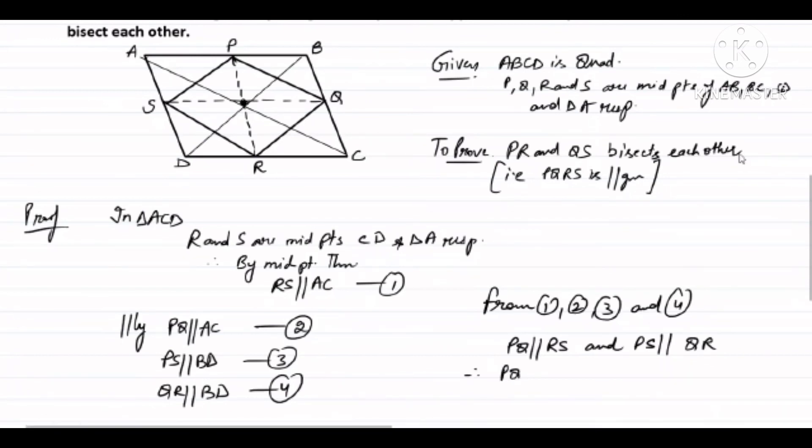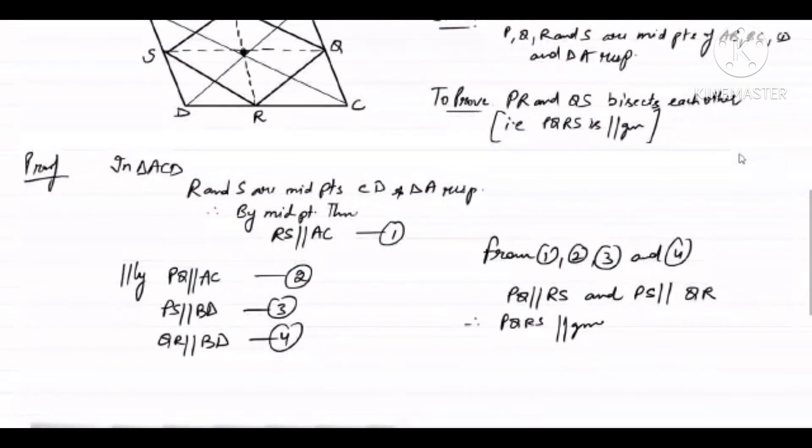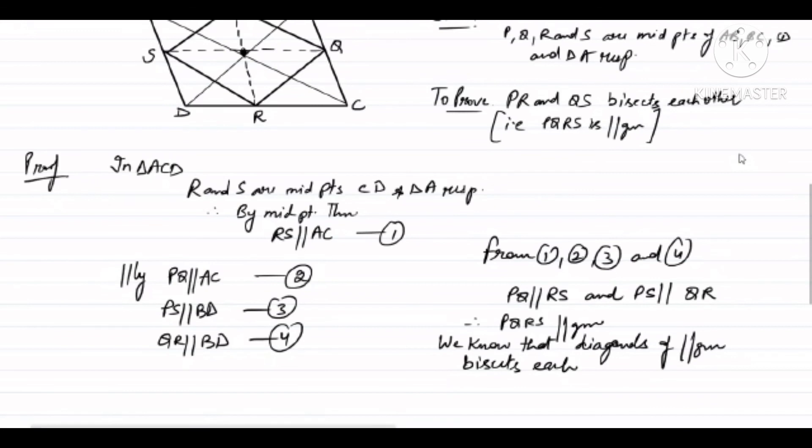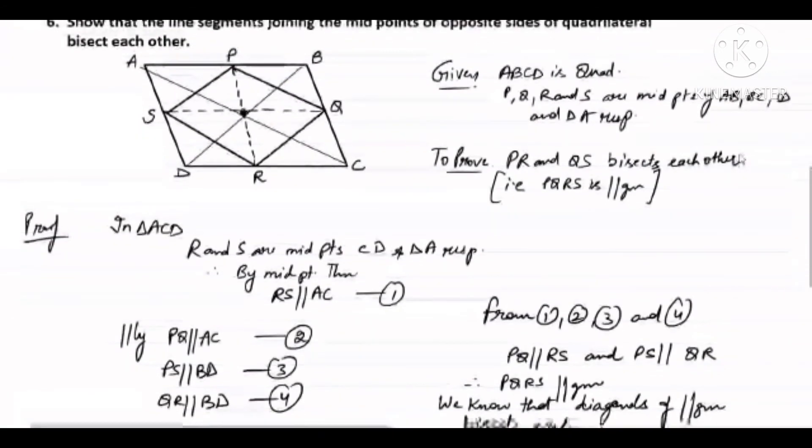Therefore PQRS will be a parallelogram. If PQRS is a parallelogram, then we know that diagonals of a parallelogram bisect each other. Therefore, PR and QS bisect each other. This is what we needed to prove, that line segments joining the midpoints of opposite sides of a quadrilateral bisect each other. Hence proved.